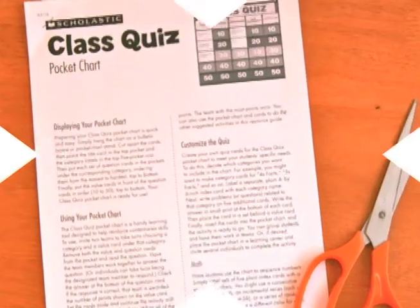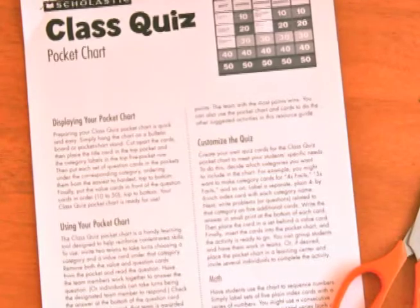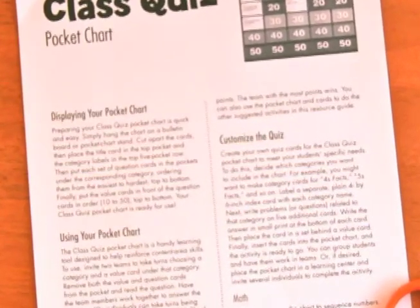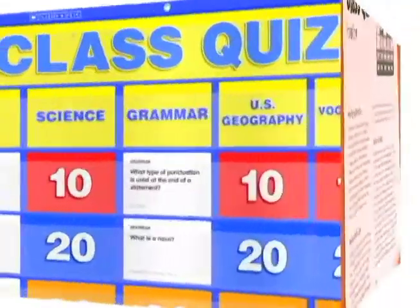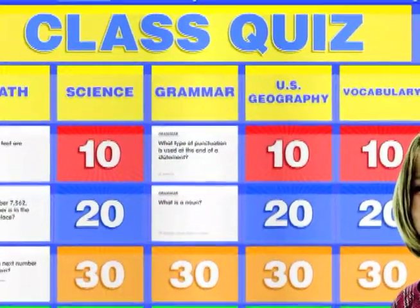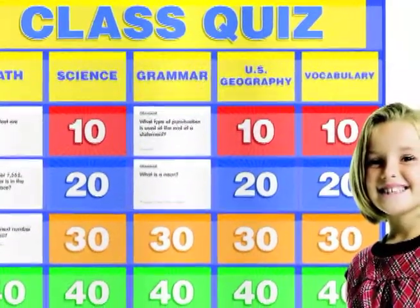The class quiz pocket chart comes with an activity guide full of suggestions to customize the chart for your classroom. Pocket charts are made of durable nylon. They're lightweight and they have reinforced grommets. When you're done, simply fold the chart flat for easy storage until you're ready for the next class quiz.